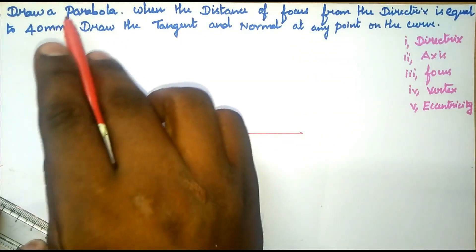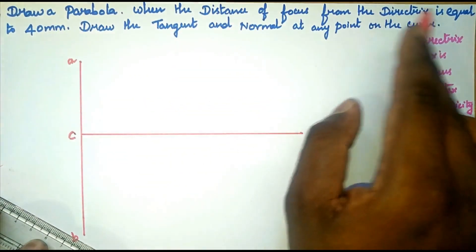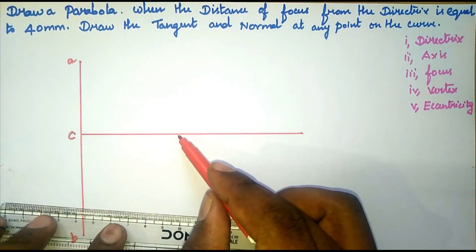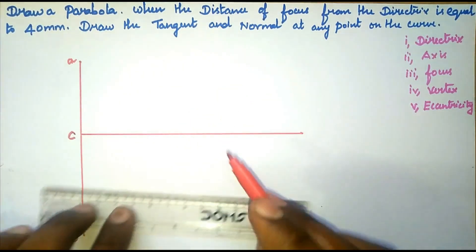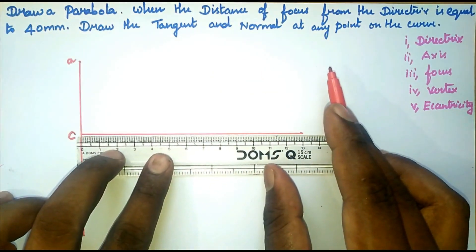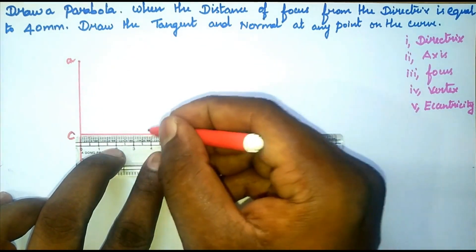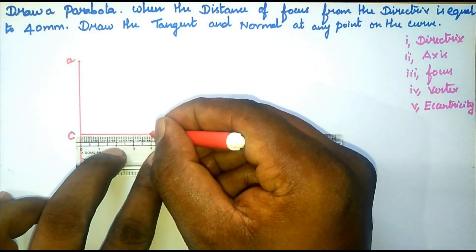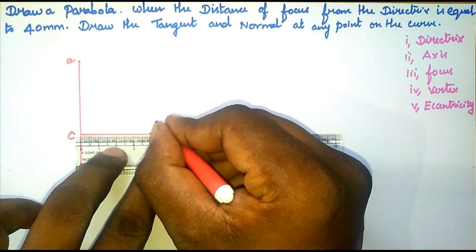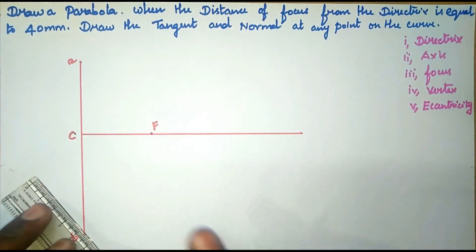The question states the distance of focus from the directrix is equal to 40 mm. So from the directrix, at a distance of 40 mm along the axis, we place the ruler, mark it as F — the focus point.